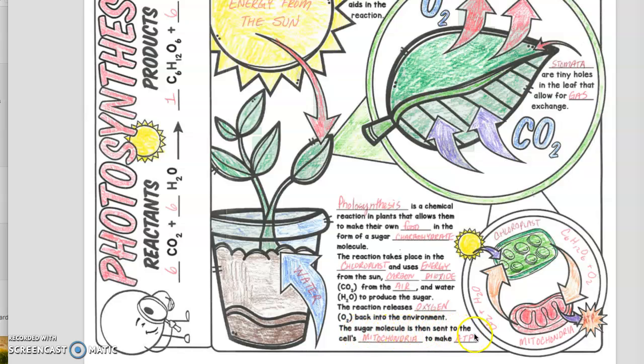Sugar molecule is then sent to the cell's mitochondria to make ATP so it's in a form that your cells can use.